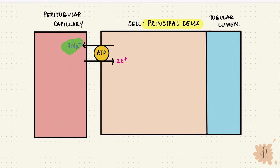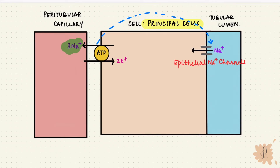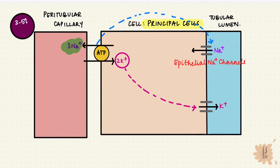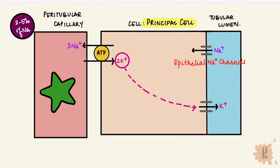The gradient created pulls sodium from the lumen through the epithelial sodium channels. The potassium that's pumped into the cell, because of the high concentration thanks to this pump, moves down its gradient to exit the cell and get into the tubular fluid. Only three to five percent of sodium gets reabsorbed here. Aldosterone has a receptor on the principal cells — it increases the sodium-potassium pump, increasing potassium secretion.